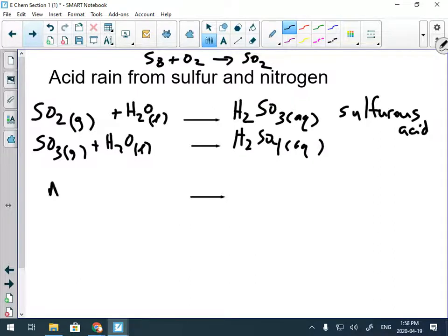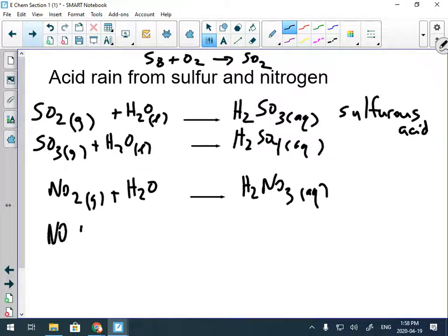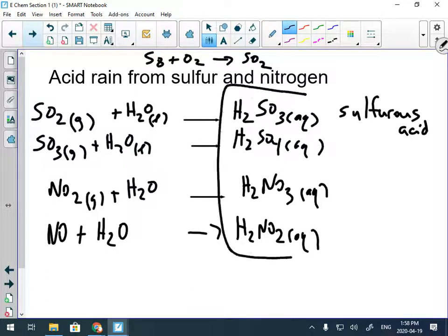If you have nitrogen dioxide and it reacts with water, you can get nitric acid. You can also get oxides of nitrogen reacting with water. And then that's how you get nitrous acid. All four of these are acid rain.